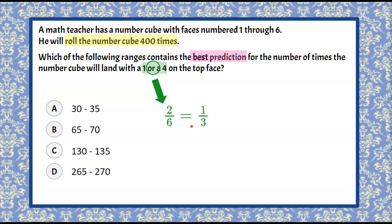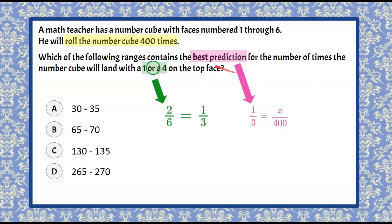So we have a 1 in 3 chance of rolling a 1 or a 4. Now we're going to say we're talking about a prediction — we're going to do this 400 times. We're going to use the probability of 1 in 3 and use that to determine how many of our 400 rolls will be a 1 or a 4. To solve this proportion, we're going to use cross product property.